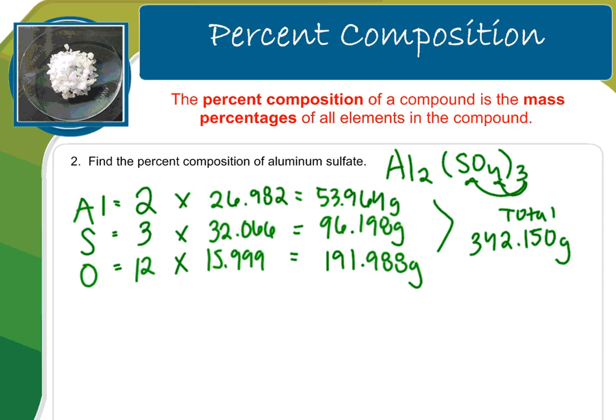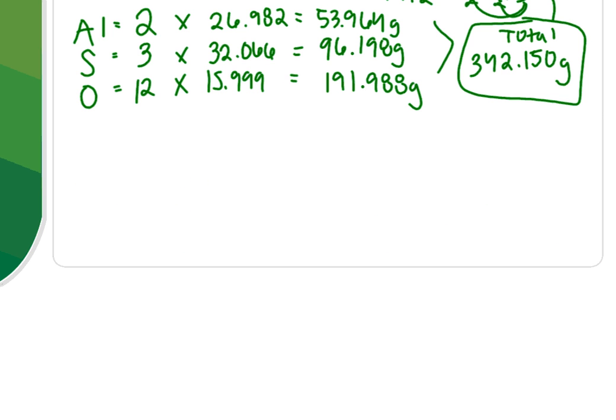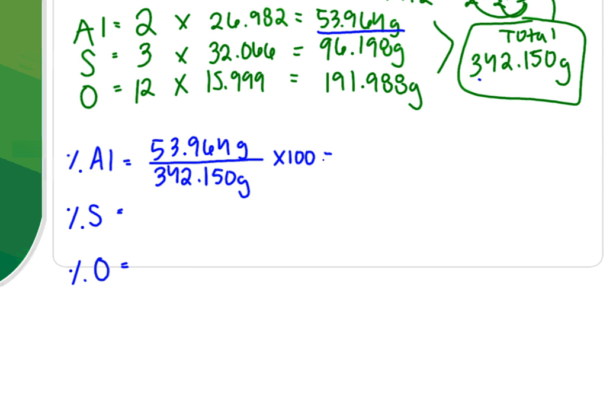That is the total mass of the entire compound. But remember, in a percent composition problem, I want to know the percentages of each. So that means I want to know the percentage of the compound that's aluminum, the percentage of the compound that's sulfur, and the percentage of the compound that's oxygen. So I am going to do the mass of the element. So 53.964 grams divided by the total mass, which is 342.150 grams times 100. So what I end up with is 15.8% of this compound is aluminum.